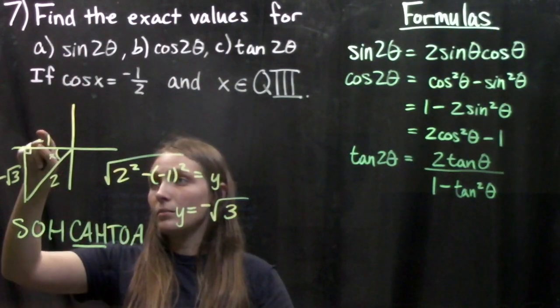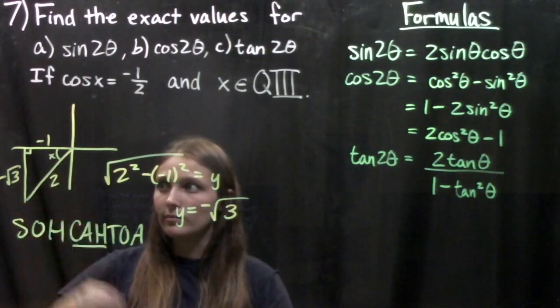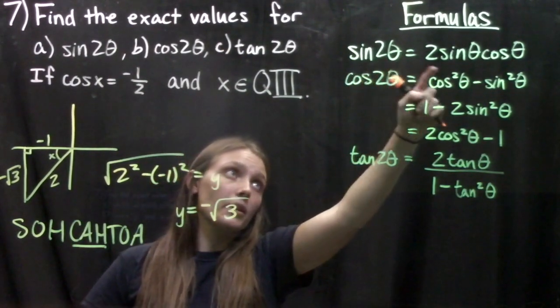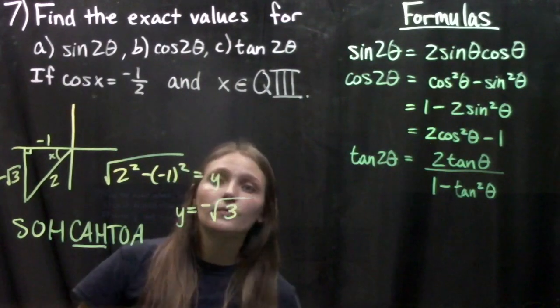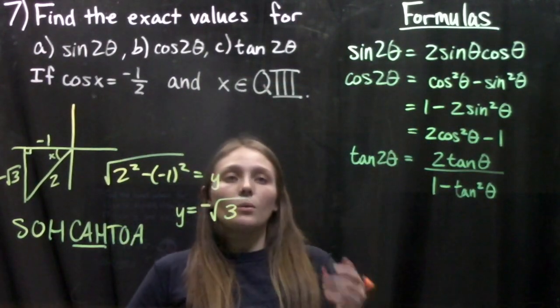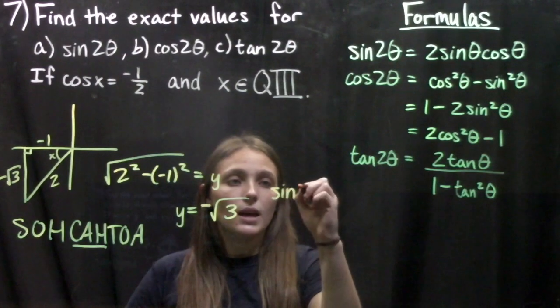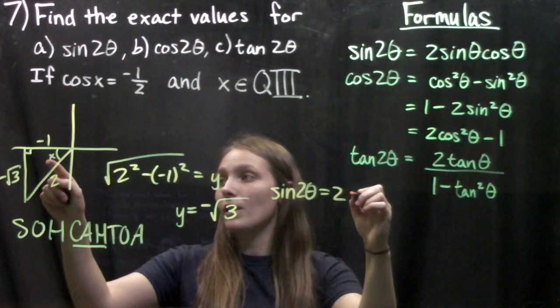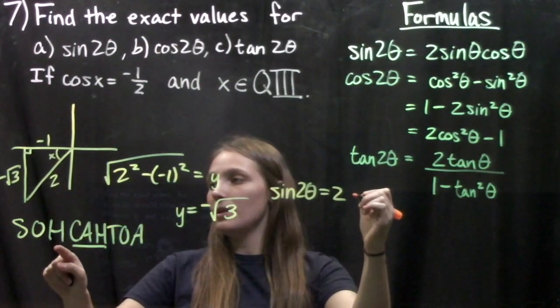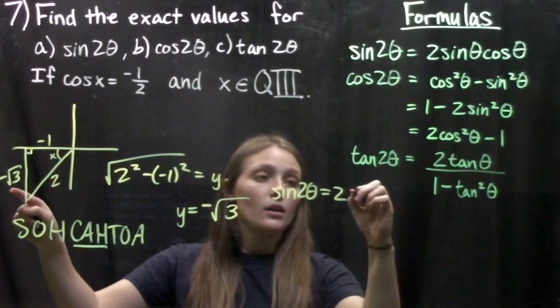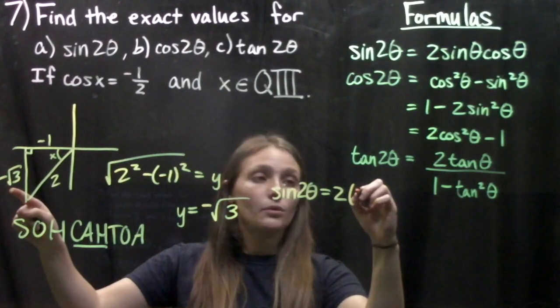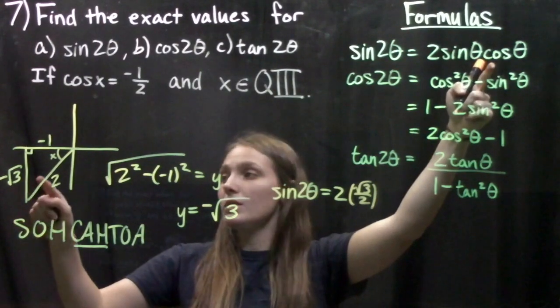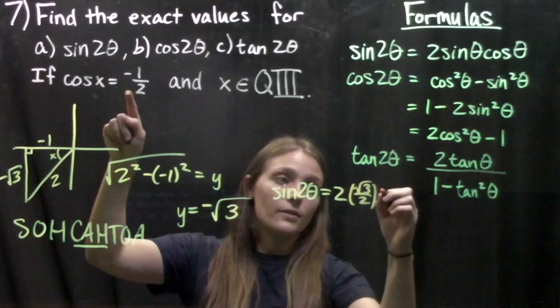Now we've got all sides of the triangle and we can plug into our formula using our reference angle. The sine of the double angle equals 2 times sine of x. The sine of x is opposite over hypotenuse, so we've got negative root 3 over 2 times our cosine of this angle which is negative half.